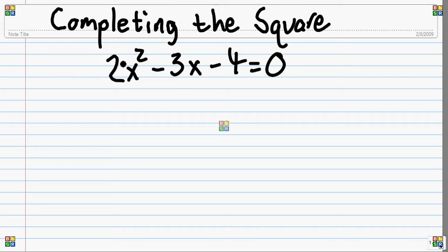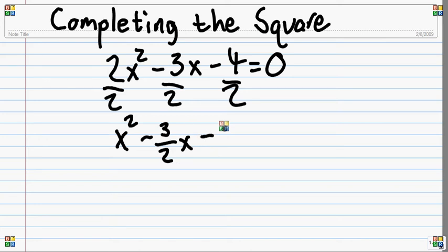Okay, so the first thing you want to do in this one, as promised, I put a number in front of the x squared, is get rid of the number in the x squared. That's what you have to do. You have to get x by itself first. So you want to divide by two by everything, right? So that way you get x squared by itself. X squared minus three halves x minus two, because four divided by two is two, and it's negative equals zero.